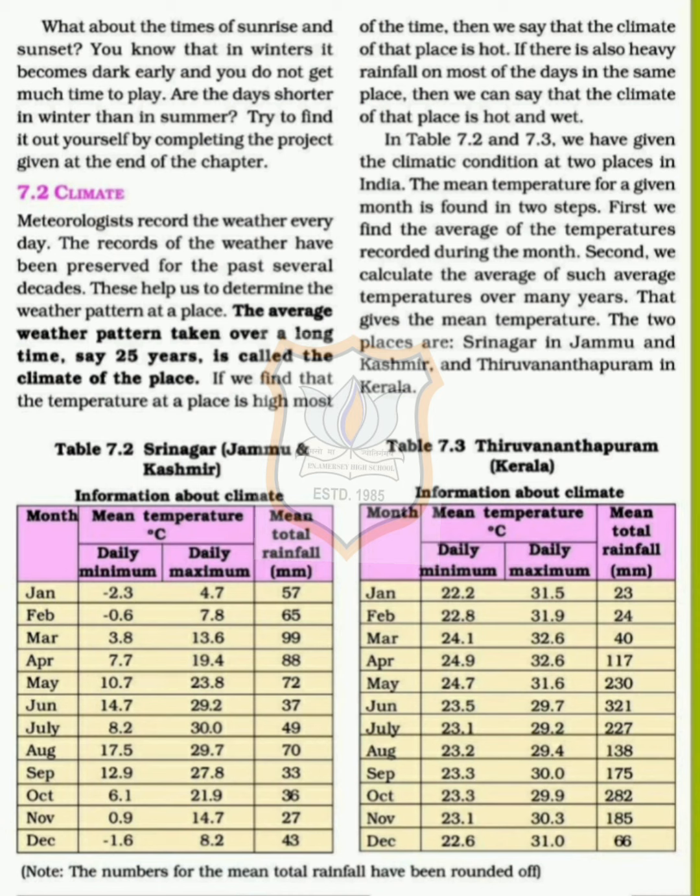Looking at tables 7.2 and 7.3, we have the temperature data for Srinagar in Jammu and Kashmir, and in table 7.3 the climate data for Kerala. Each month's minimum and maximum temperature is recorded, along with total mean rainfall. This gives the mean temperature, covering the two places: Srinagar in Jammu and Kashmir and Thiruvananthapuram in Kerala.